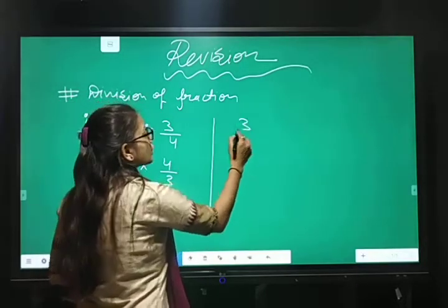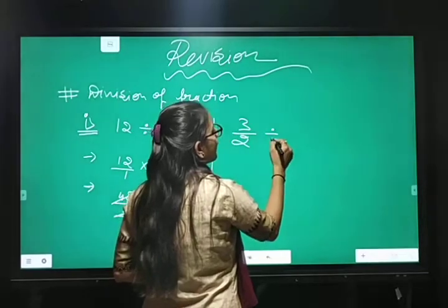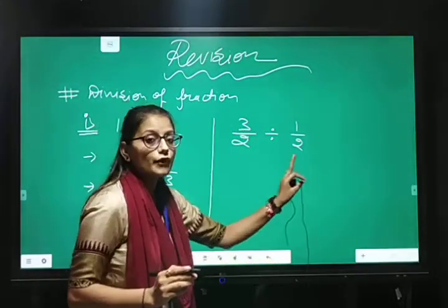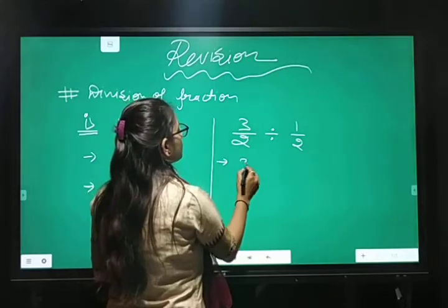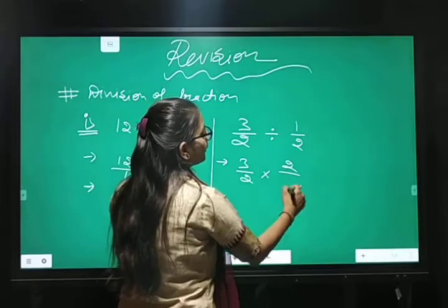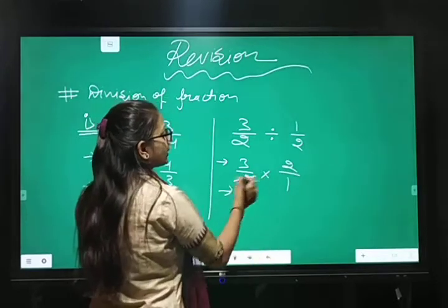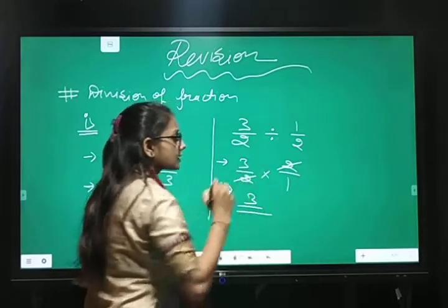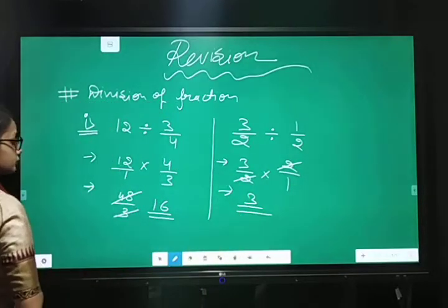One more example is 3 upon 2 divided by 1 upon 2. So, reciprocal of second fractions 3 upon 2, multiplier sign will be changed and 2 upon 1. We can write, cancel out the 2. 2 cancel hujayega 3. Answer is 3. Clear?